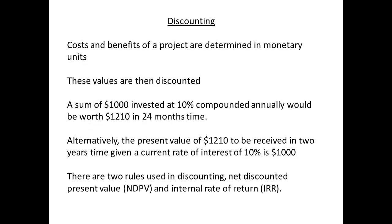Government departments are frequently asked to produce figures for ministers to price projects or compare two different projects. To do this, they need to measure benefits in terms of monetary units. However, they also need to take into consideration values at the end of the project. For example, at the end of a two-year project, an investment of $1,000 with interest rates of 10% annually will be worth $1,210. Or, in reverse, $1,210 in two years' time is worth $1,000 today at a current rate of interest of 10%.